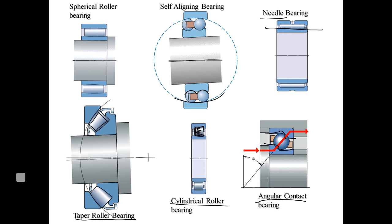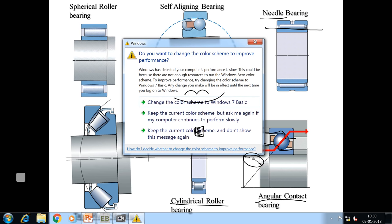The axial load carrying capacity of angular contact bearings increases as the contact angle alpha increases. So for angular contact ball bearing, the load carrying capacity increases with increasing contact angle.